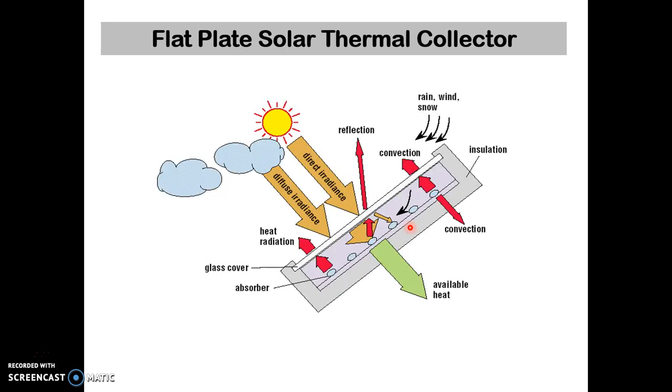A flat plate solar collector consists of an absorber material covered with a glass top. You can see here. Incident solar energy is collected by these absorbers by the use of convection. Then they are transferred over the medium.